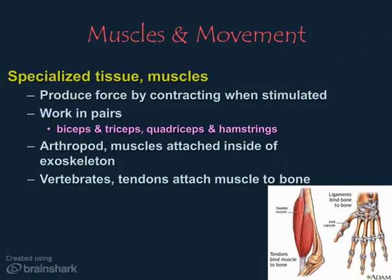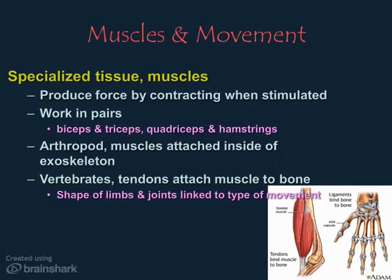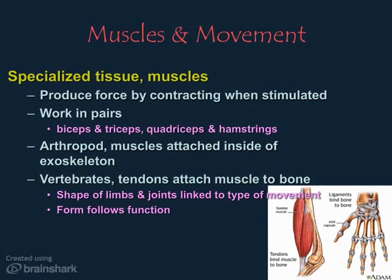If you study the shape of limbs and joints in vertebrate animals, you'll find a wide variety of joints. The shape of the limb and the joint are closely linked to the type of movement allowed — rotational, hinged, side-to-side. This is another example of the scientific law of form follows function: the shape of the joint determines the motion, and the need for motion determines the shape of the joint. This is why your elbow moves differently than your shoulder, and differently than your neck or jaw.